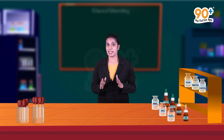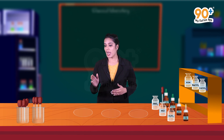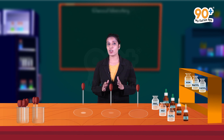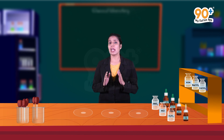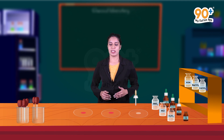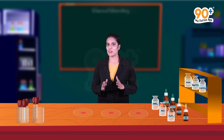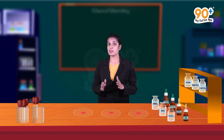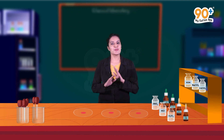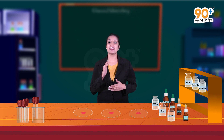Now again, take three new watch glasses and add one drop of hydrochloric acid, nitric acid, and sulfuric acid respectively, then add one drop of methyl orange to each of them. See, the solution turns pinkish red color. Methyl orange gives such a color change only if it meets something acidic in nature. Hence, it is very clear that all these items are acids.